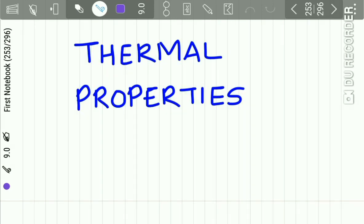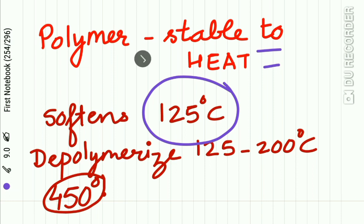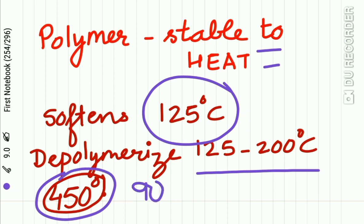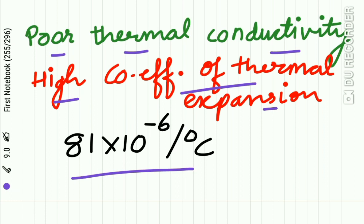Regarding thermal properties of denture base resins: the polymer is stable to heat; it softens at 125°C and depolymerizes when the temperature rises between 125–200°C. At 450°C, 90% of the polymer is converted into monomer. Denture base resins have poor thermal conductivity and a high coefficient of thermal expansion, which is 81 × 10⁻⁶ per degree Celsius.